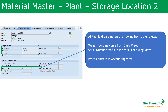Plant Store Location View 2 contains details taken from the basic views such as gross weight, net weight, and dimensions. There are also general plant parameters like profit center, serial number profile, and loading group. These details are pulled from different views because for the storage location, staff need to see all required details in one view, and some organizations may not provide authorization for other views to the store personnel.